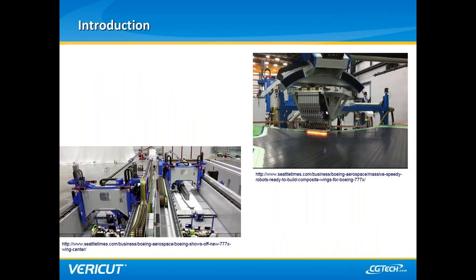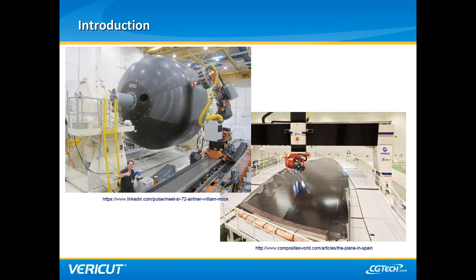Why ACM? Companies are able to produce large primary structures out of composites with timelines that simply cannot stand up to manual placement of material. Here we see inside the Everett-based Boeing Composite Wing Center, where both machines are producing parts for the 777X project. Complex shapes are possible with repeatable and reliable automated processes in ways that surpass manual material placement, as seen with this massive pressure vessel and wing skin panel.